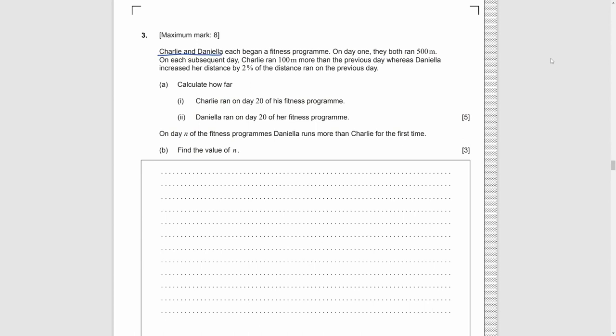Question 3. There are two people. In the first day, they both run 500 meters. On each subsequent day, C runs 100 meters more than the previous day, so it forms an arithmetic sequence. And for D, she runs 2% of the distance more than the previous day, so it forms a geometric sequence.